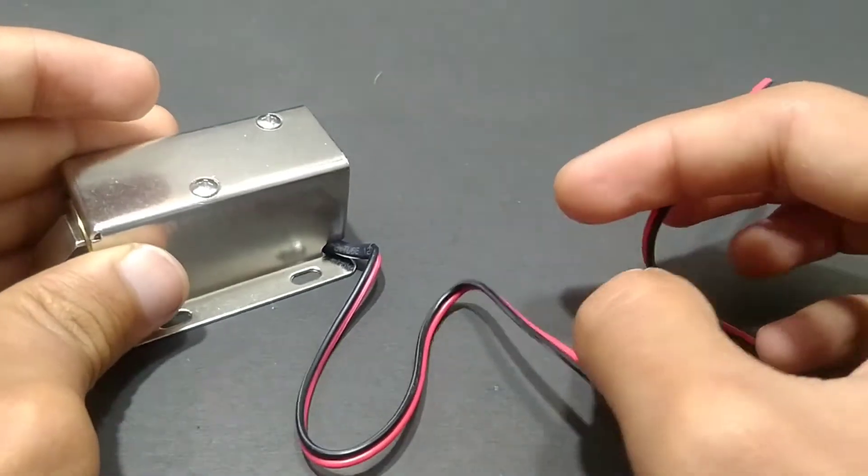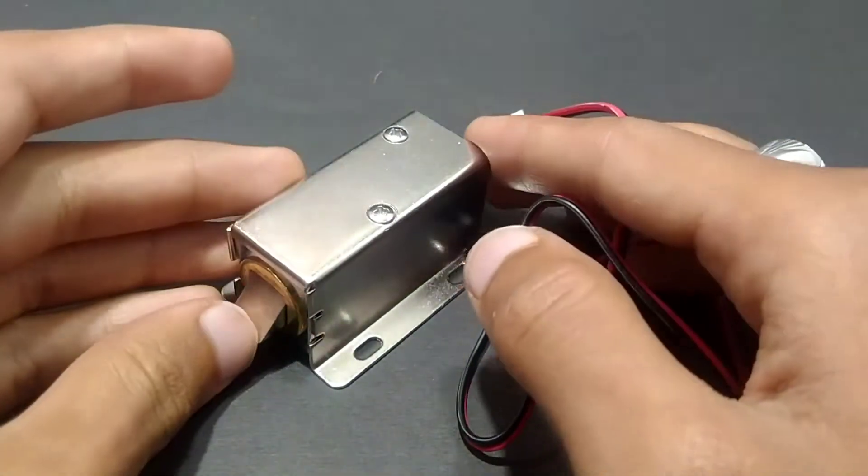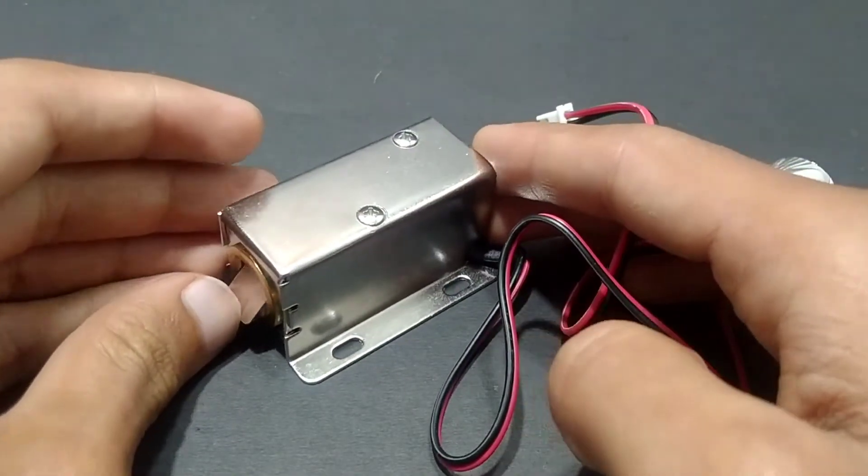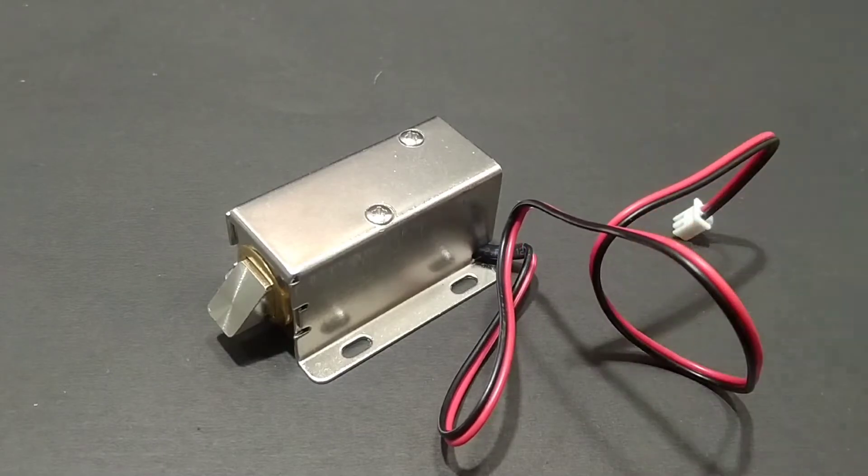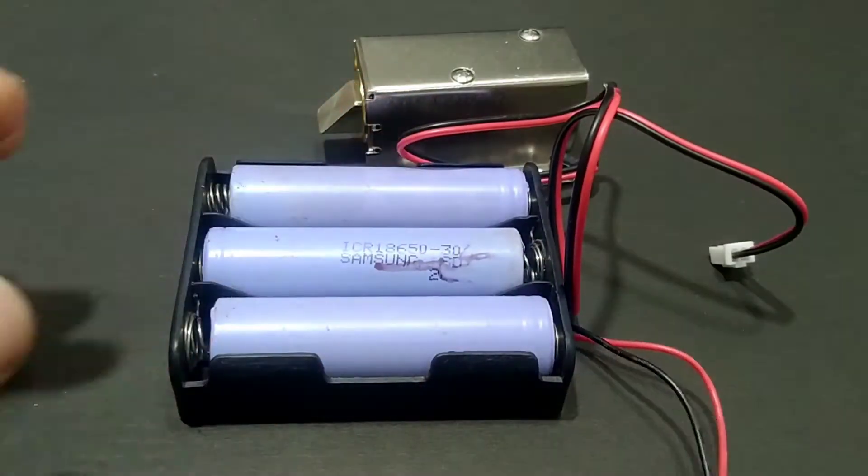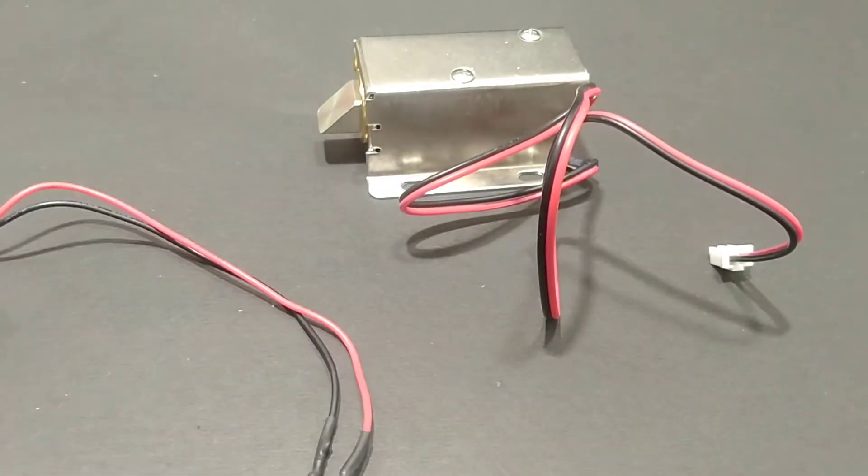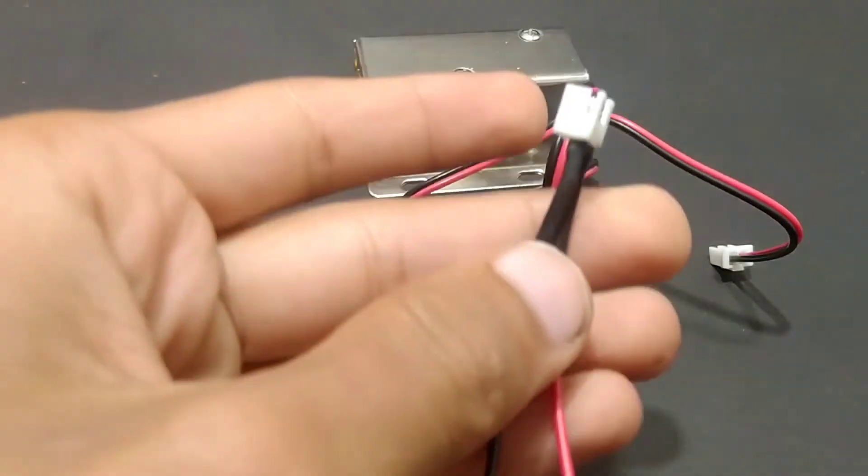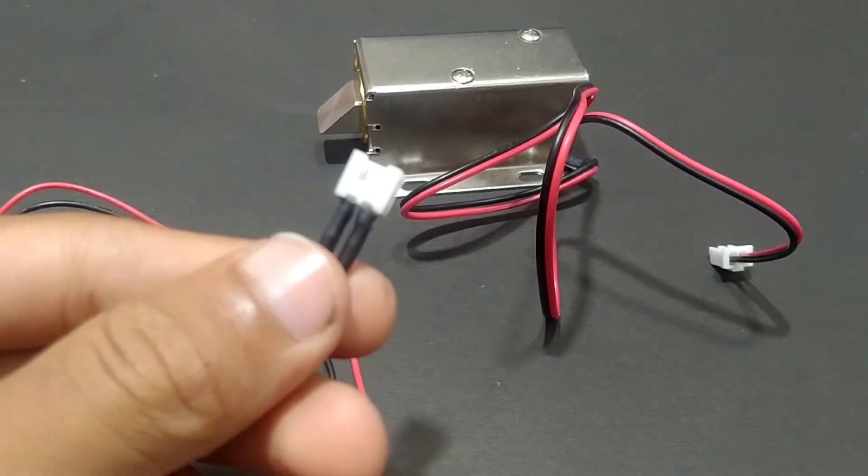See friends, this is the 12 volt solenoid lock. Now let's unbox and test it. Let's connect it with a 12 volt battery. For that, we will need a separate connector like this.